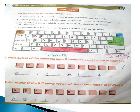Write output of the following keys without the combination of shift key. When we press the key without shift, what result will we get? Capital E key will give small a. Number 2 will give 2. Dot will give dot. E will give small e. 5 percent will give 5.